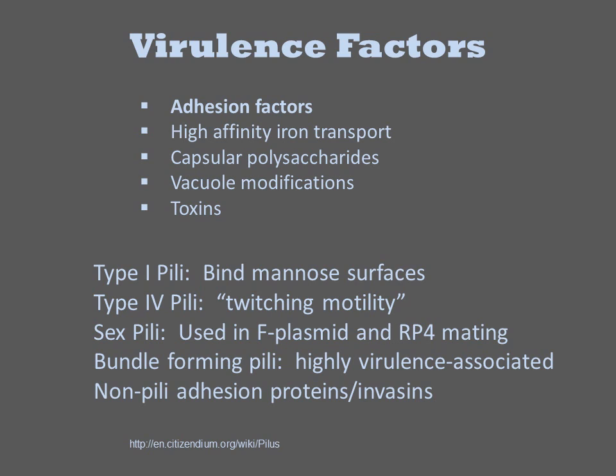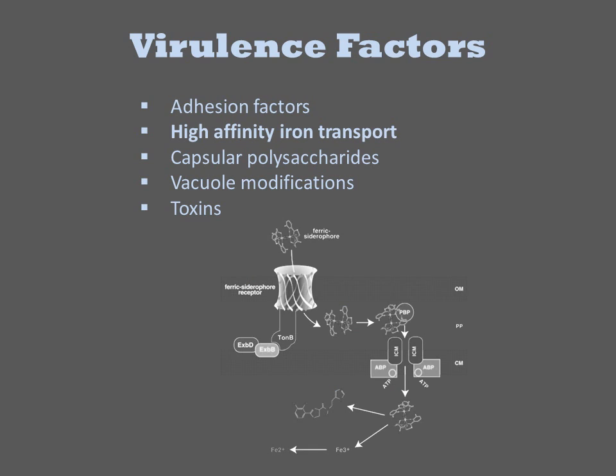There are also many shorter adhesins, including single polypeptide surface appendages like invasin. High-affinity iron transport is the mechanism by which bacteria obtain iron during an infection. All organisms sequester free iron, both to protect themselves from free radical formation and to avoid pathogens. Iron is absolutely essential for any organism to grow, so pathogenic organisms have evolved exotic mechanisms for taking up iron from sequestered sources.